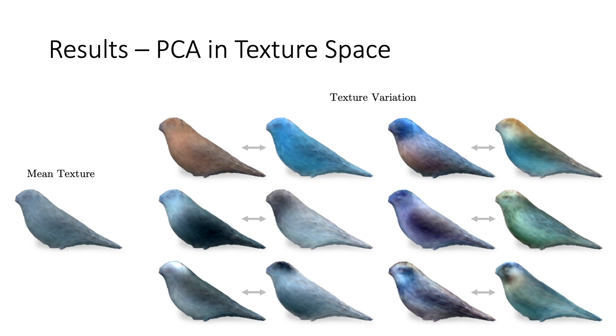Here we visualize the space of predicted textures by fitting a PCA model on all textures predicted on the train set. For ease of visualization, we visualize 6 PCA axes of variation rendered on the final learnt mean mesh.